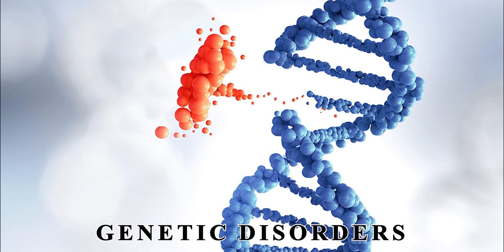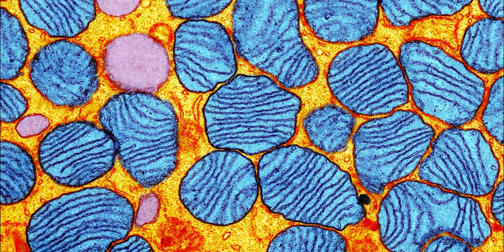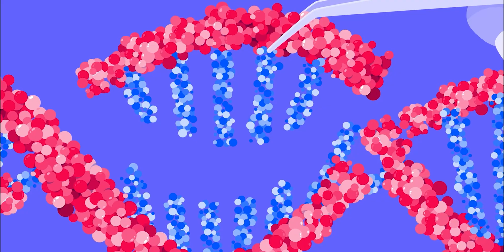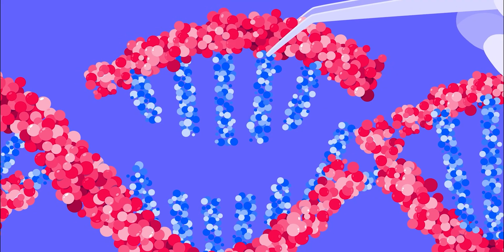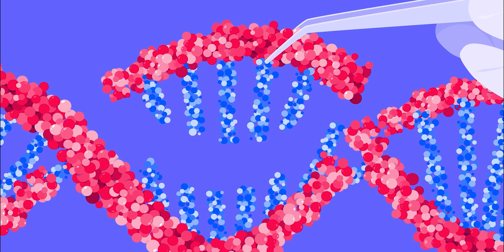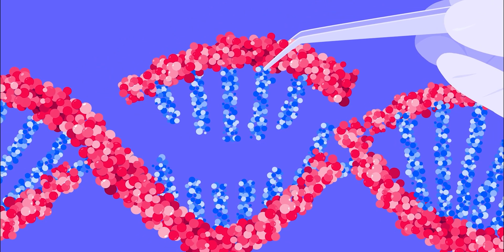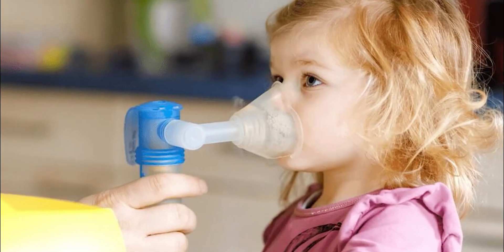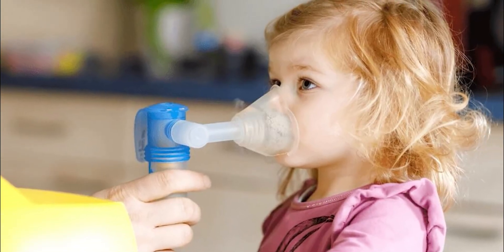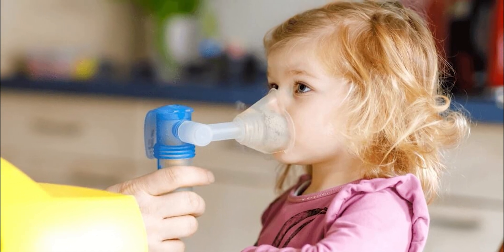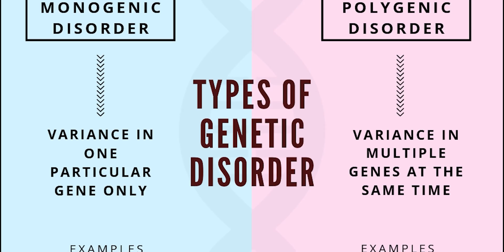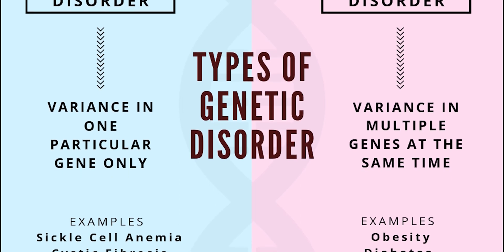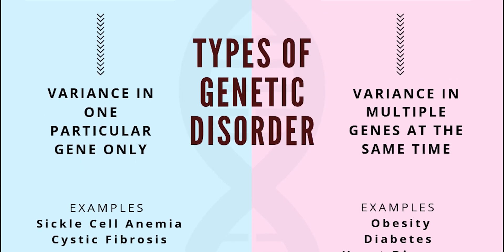Genetic disorders. Unfortunately, genetics can also play a role in the development of certain disorders. These disorders can be caused by genetic mutations, which are changes in the DNA sequence that result in abnormal protein production. This can result in a wide range of symptoms and health problems depending on the specific disorder. Some common examples of genetic disorders include cystic fibrosis, sickle cell anemia, and Huntington's disease.